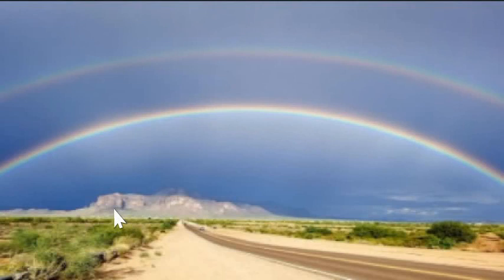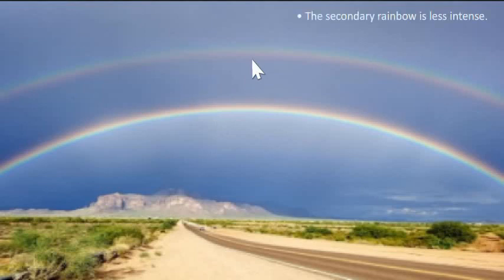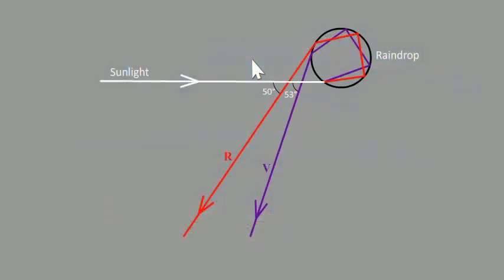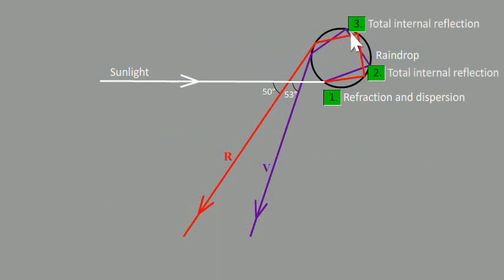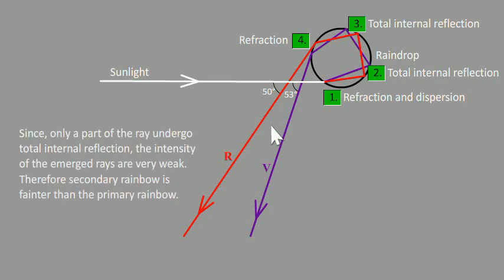Sometimes there are two rainbows visible in the sky. The rainbow I described already is the primary rainbow which is this bottom one. Under favorable conditions, a secondary rainbow can be seen just above the primary rainbow. The secondary rainbow is not as intense as the primary rainbow. The secondary rainbow has its color order just the reverse of the primary rainbow. The reason behind this is that there are some raindrops where sunlight enters and gets refracted and dispersed as a result. Then internal reflection happens twice before emerging out of the raindrop. Since only a part of the ray gets reflected, the two reflections reduces the intensity of the emerging ray so much that the secondary rainbow is always fainter than the primary rainbow.